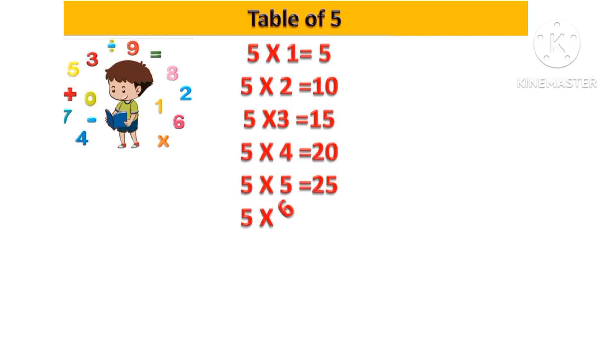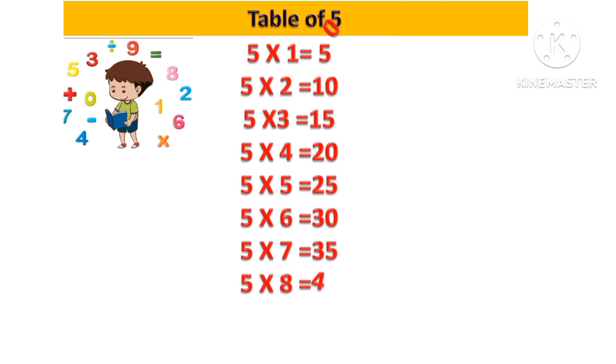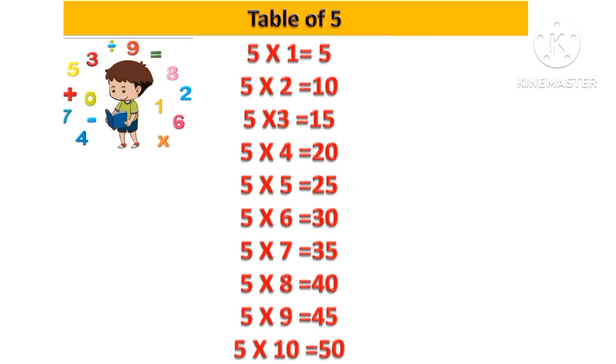Let's revise: 5 one's are 5, 5 two's are 10, 5 three's are 15, 5 four's are 20, 5 five's are 25, 5 six's are 30, 5 seven's are 35, 5 eight's are 40, 5 nine's are 45, 5 ten's are 50.